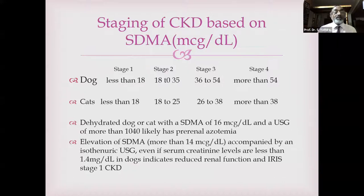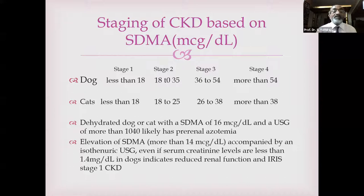Indications for renal replacement therapy: intractable hyperkalemia, life-threatening volume overload, and persistent uremic symptoms. Options include peritoneal dialysis, which is more readily available for animals than hemodialysis, and extracorporeal replacement therapy including intermittent hemodialysis (IHD) and continuous renal replacement therapy (CRRT). Both IHD and CRRT require vascular access.